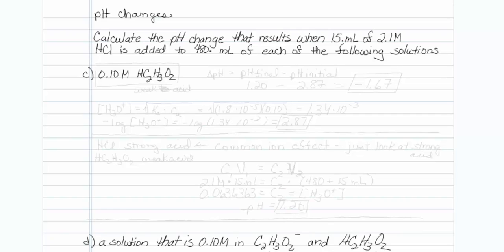Continuing with the problem of pH changes, parts C and D. Once again, we are adding a small amount of HCl to 480 mL of various solutions. Don't forget that the change in pH is going to equal the pH final minus the pH initial.